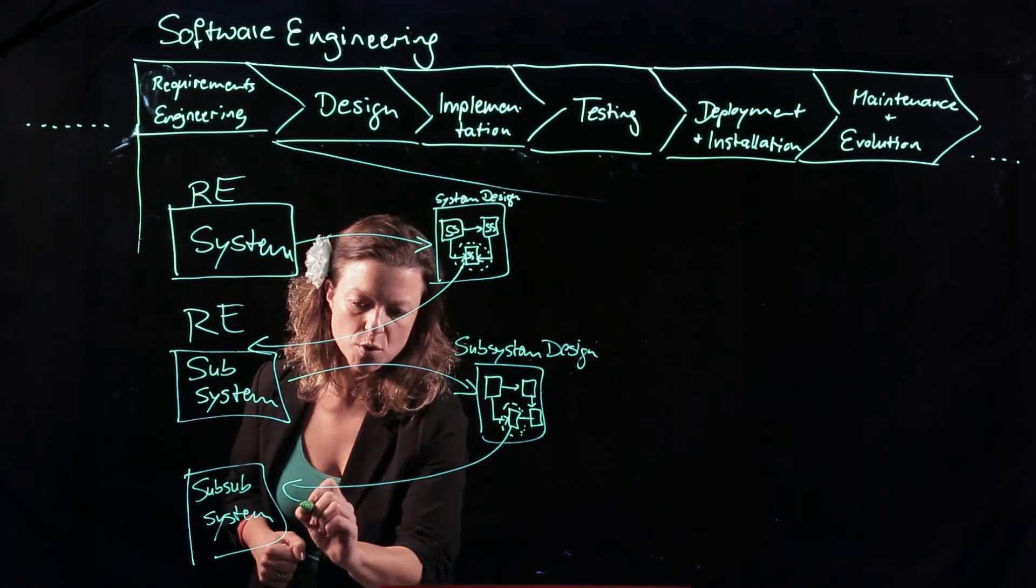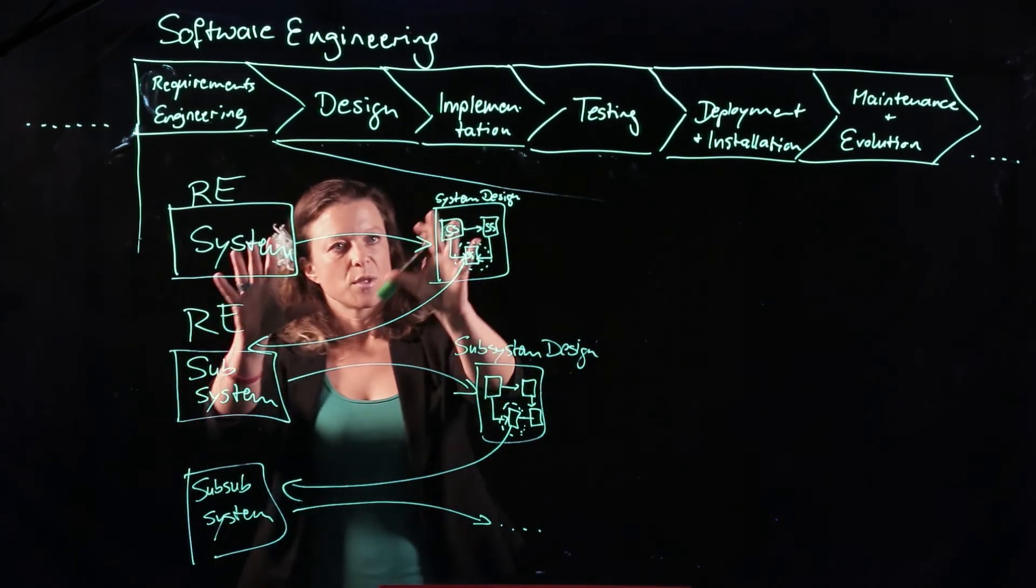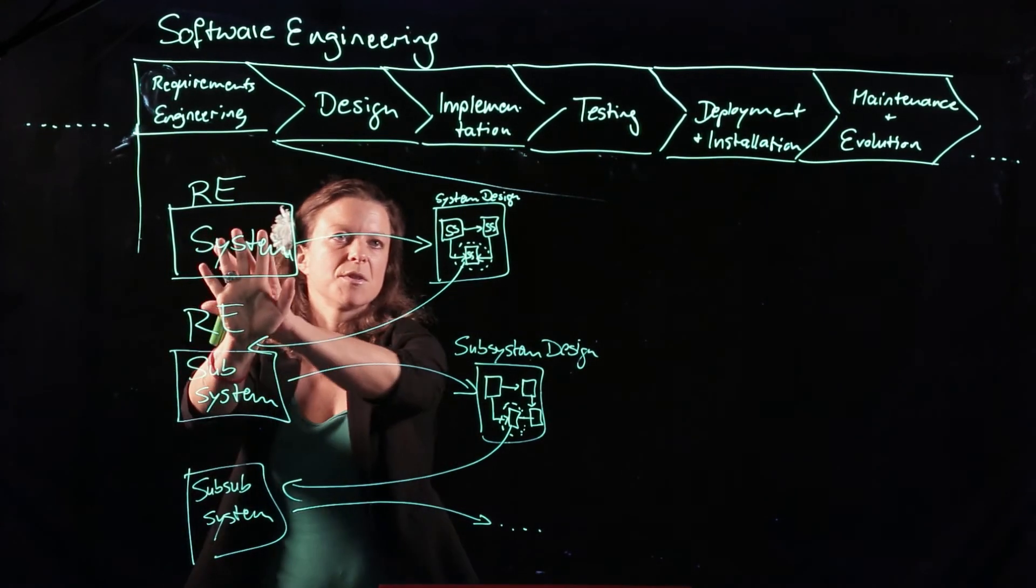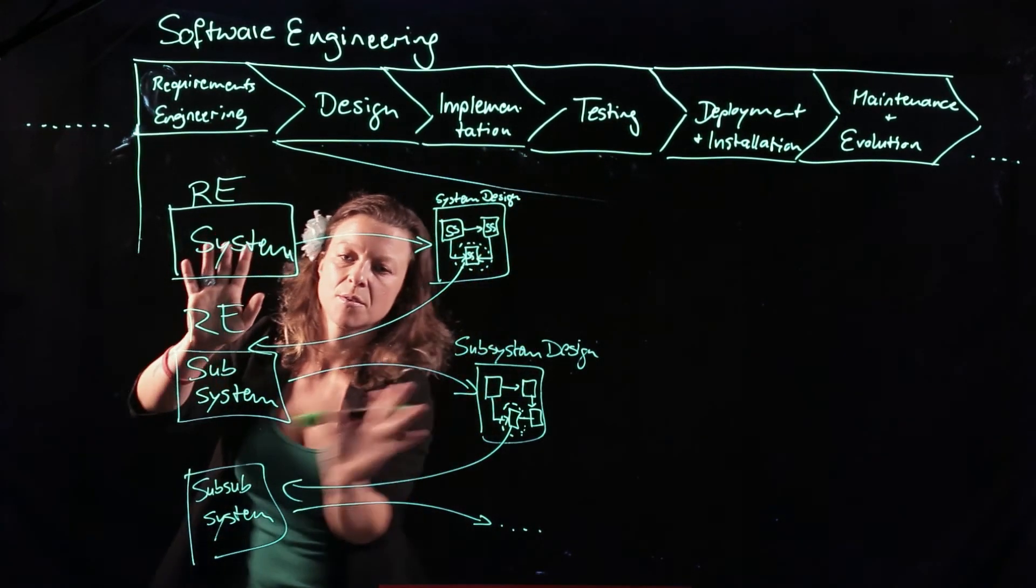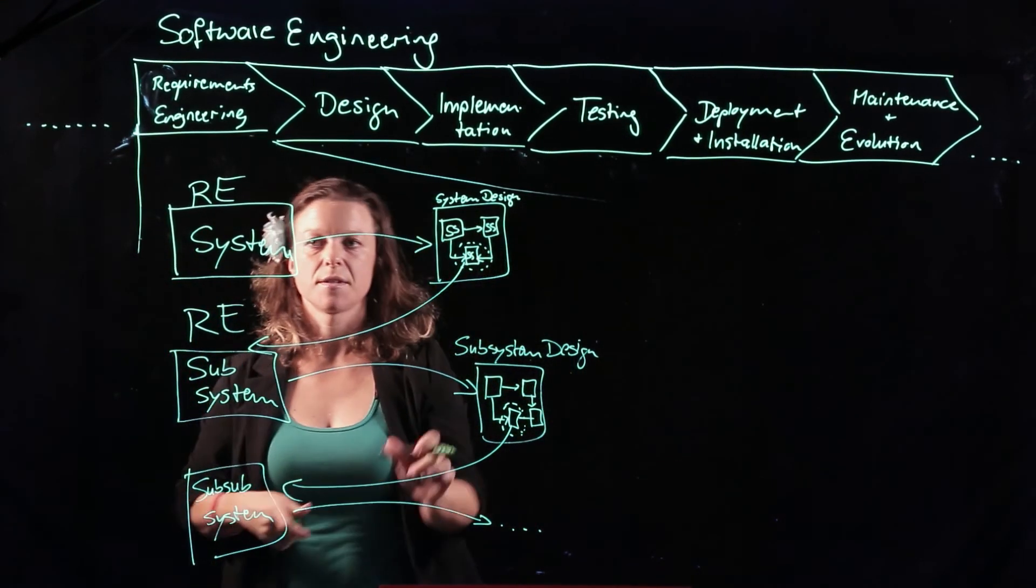Okay, to not turn this into a bad joke, I'm not going to repeat doing this. I'm also running out of board, but you get the point. We start with system level requirements, system level design, move into the next layer, system design, move into the next layer, system design. And now I'm going to need a different color.